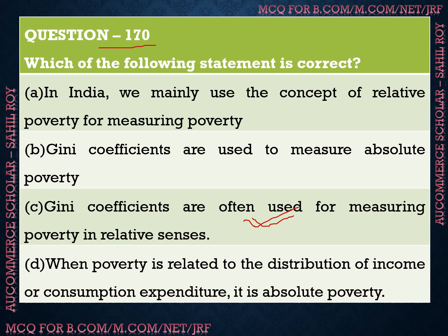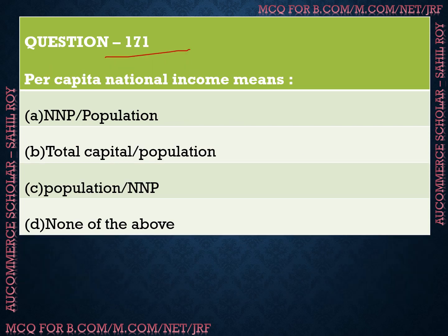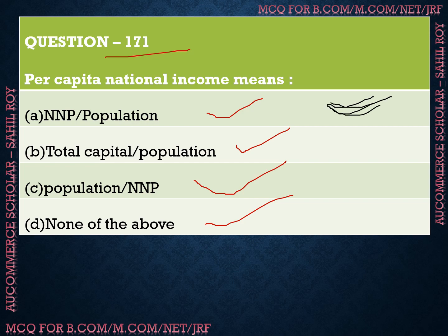Question number 171: Per capita national income means? We have four options: Option A is NNP divided by population, Option B is total capital divided by population, Option C is population divided by NNP, and Option D is none of the above. The correct answer is Option A — per capita national income means NNP divided by population.